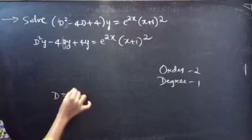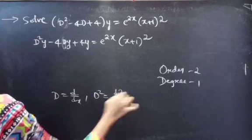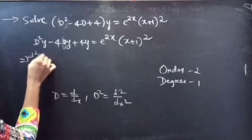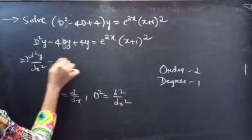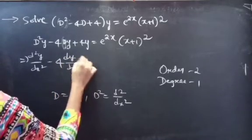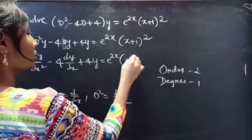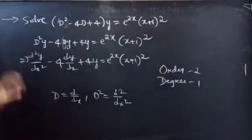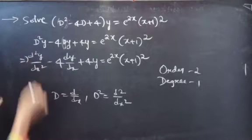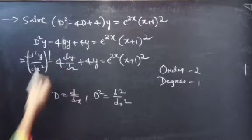We know that D is a differential operator, so D squared will be d squared by dX squared. We can write the equation as d squared Y by dX squared minus 4 into dY by dX plus 4Y equals E power 2X into X plus 1 whole square. Here d squared Y by dX squared is the highest derivative, so our order will be 2, and the highest power of the highest derivative is the degree, which is 1.